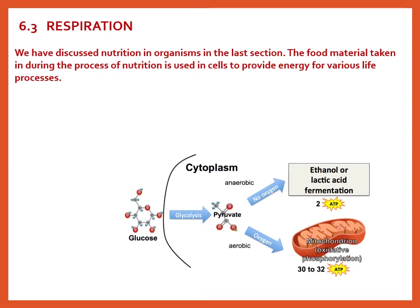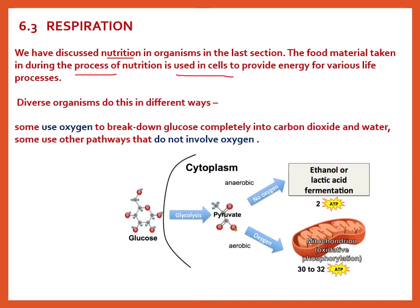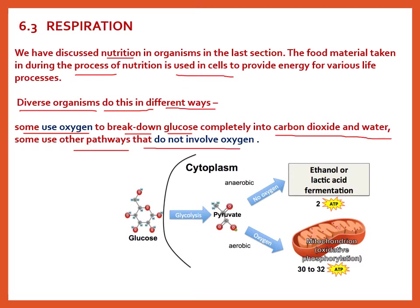We have already discussed nutrition in organisms in the last section. The food material taken in during the process of nutrition is used in cells to provide energy for various life processes. Diverse organisms do this in different ways — some use oxygen to break down glucose completely into carbon dioxide and water, and some use other pathways that do not use oxygen.